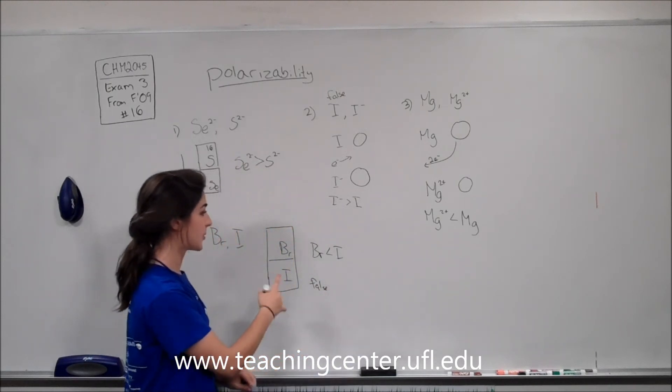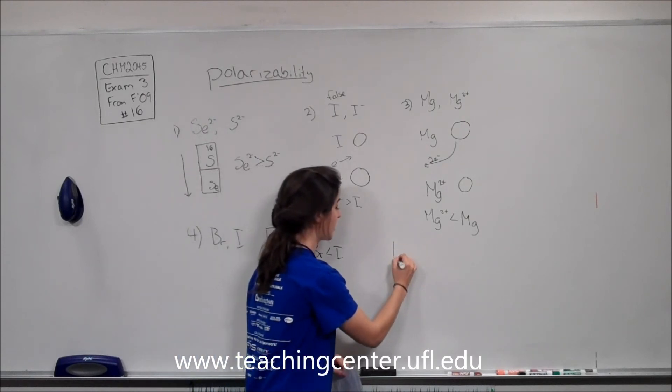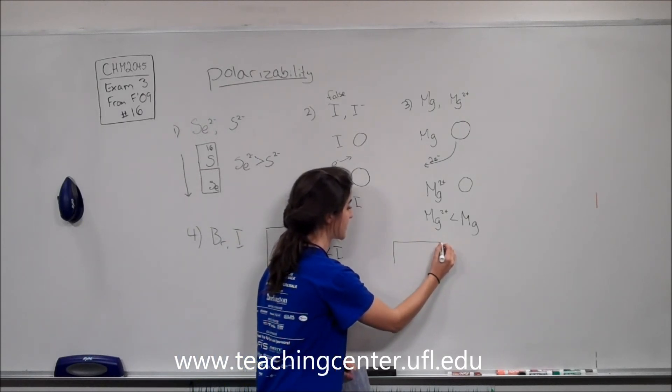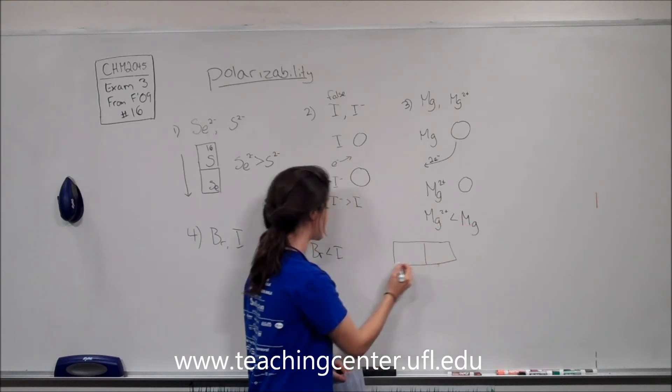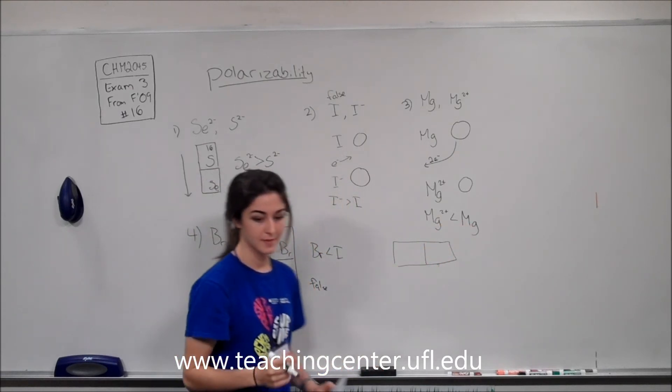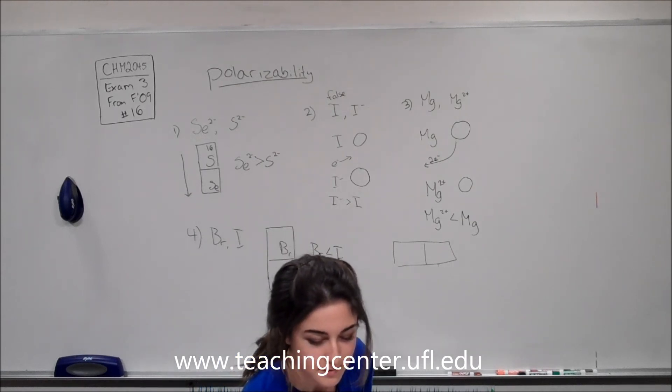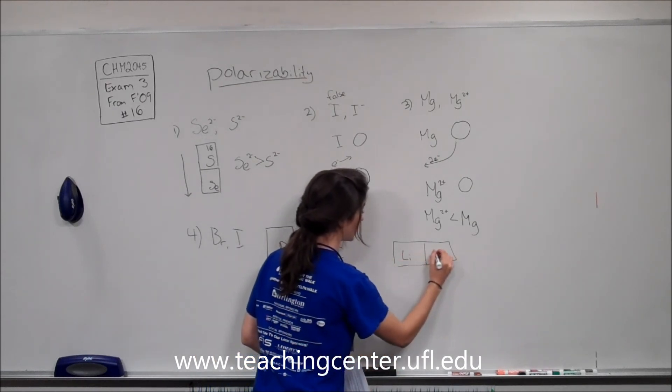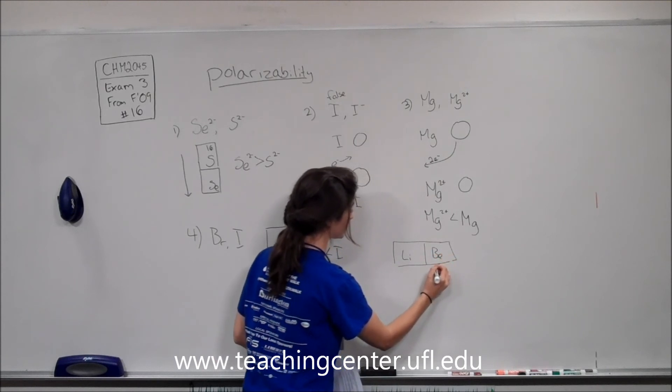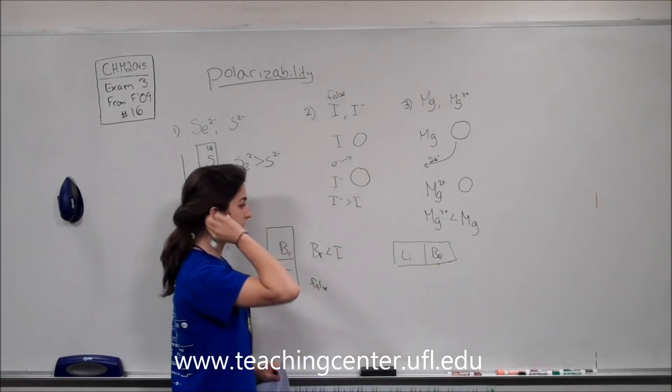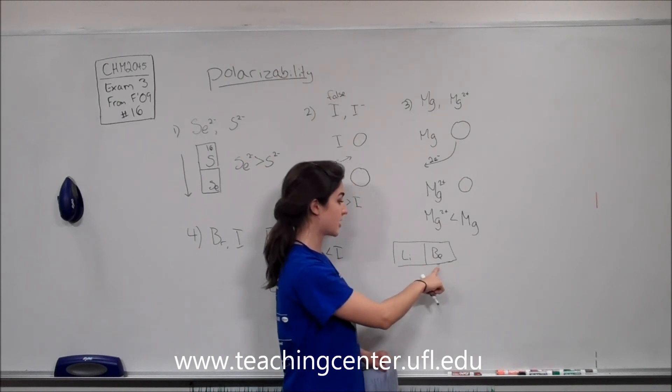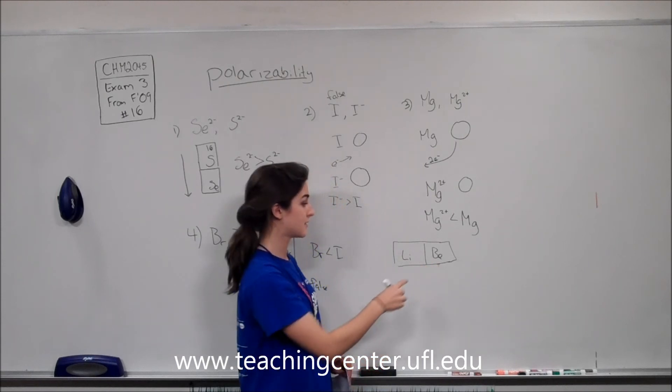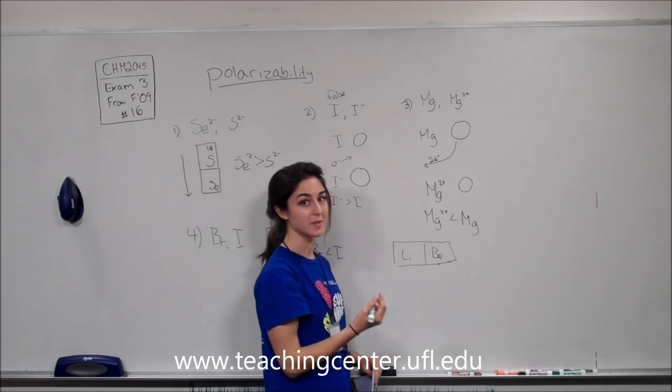Now I should also point out to you that polarizability also changes when you move across a period. So let's say you have lithium and beryllium. Beryllium has more protons than lithium and more electrons, but the effective nuclear charge of beryllium is greater.